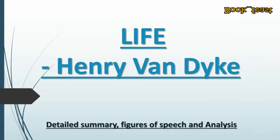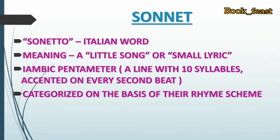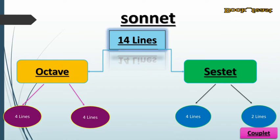Let's go into the summary today. What is a sonnet? The origin of the word 'sonnet' is 'sonato,' which is an Italian word meaning 'little song' or 'a small lyric.' Usually, a sonnet takes iambic pentameter — a line with 10 syllables accented on every second beat. A sonnet's rhyme scheme can be calculated from its pentameter, and it is divided into two categories: the octave and the sestet. The octave holds 8 lines and the sestet holds 6 lines.